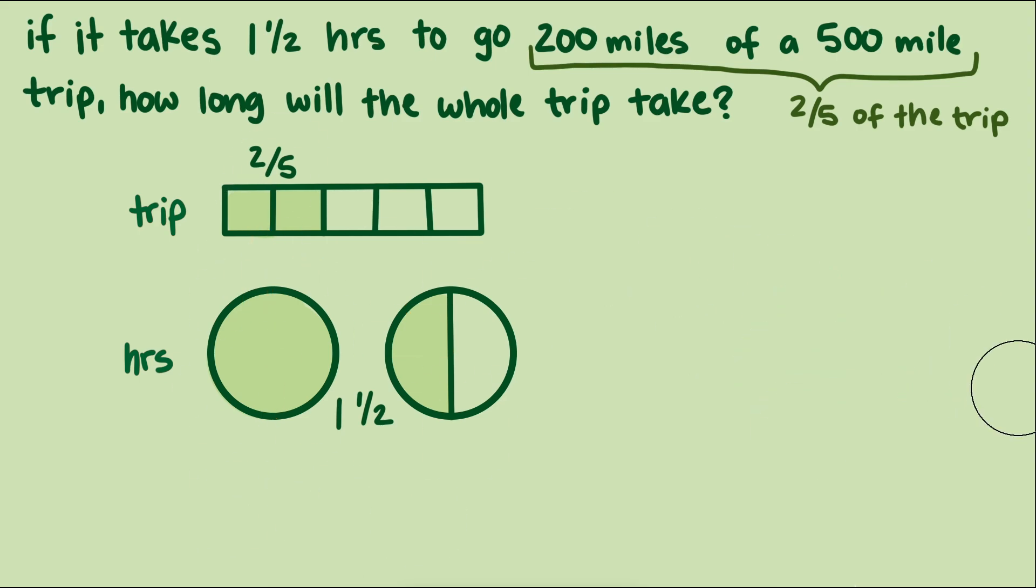Or we can reason about it this way, if it takes one and a half hours to go every two-fifths of a trip, we can find how many two-fifths are in one complete trip, by dividing two-fifths into one. Then multiply that answer by one and a half, since every two-fifths of the trip takes one and a half hours.